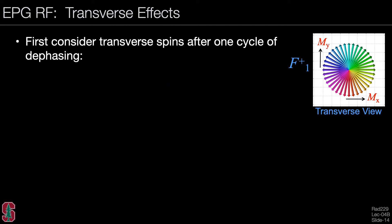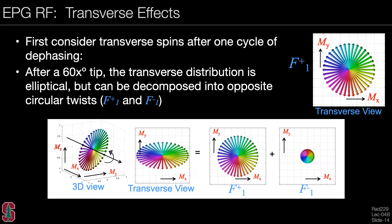So let's look at some examples. If we first consider the transverse spins after one cycle of dephasing, we have a picture shown here at right. The magnetization is in the F plus sub one state. And this is the view from above. Now, after a 60 degree tip about MX, the transverse distribution is now elliptical. If we look down on this disk after we've rotated it as seen at left, we have this elliptical transverse magnetization. You can decompose this elliptical transverse magnetization into opposite circular twists with different weights. So you see that the magnitude of the F plus sub one state and the F minus sub one state are different. And this results in this elliptical magnetization. The longitudinal states would also be affected and this will be described shortly.